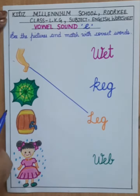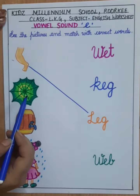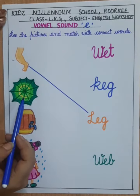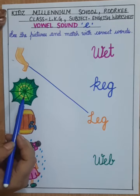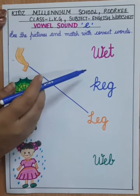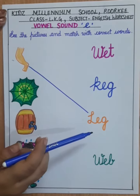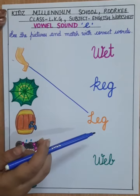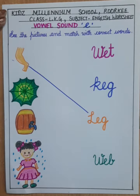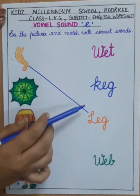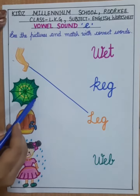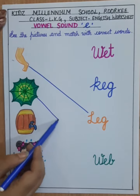Next is web. Web means Jala. W-E-B. Web. So find out web here and match it.